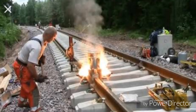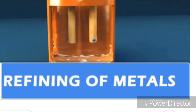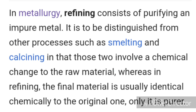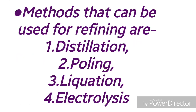Now let us move on to the refining or purification of metals — this is the third stage. The first stage is concentration or dressing of the ore, the second stage is extraction of metals, and the third stage is refining or purification. In metallurgy, refining consists of purifying an impure metal, distinguished from melting and calcination, which involve a chemical change, whereas in refining the final material is chemically identical to the original.